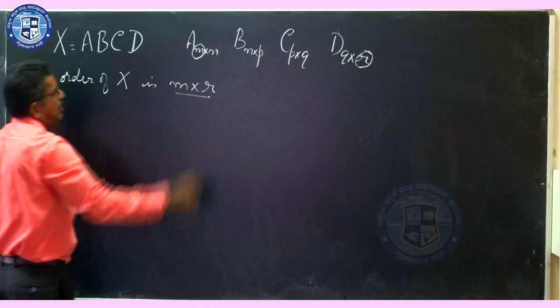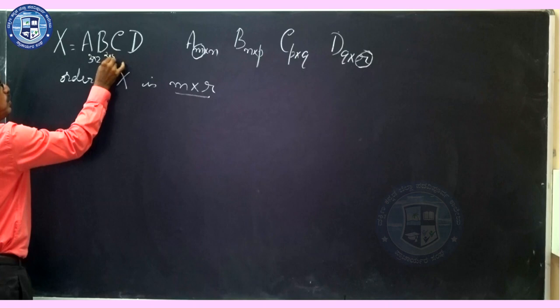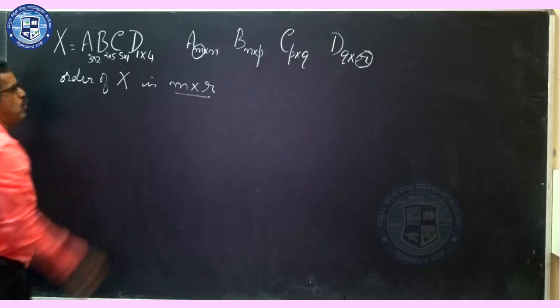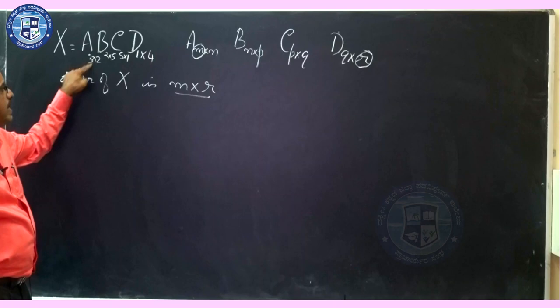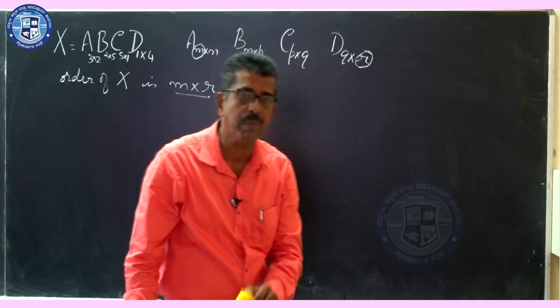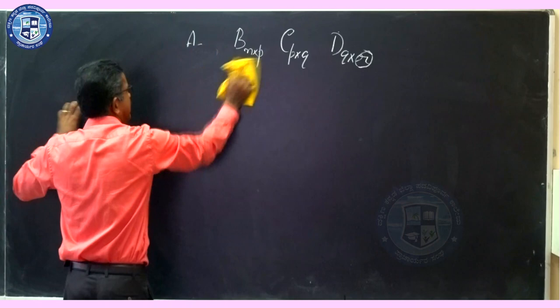For example, if A is 3×2, B is 2×5, C is 5×1, and D is 1×4, the order of X would be 3×4. That is very simple. We shall continue with the five-mark questions.